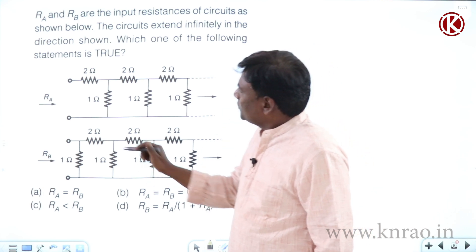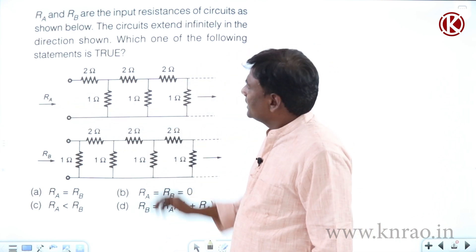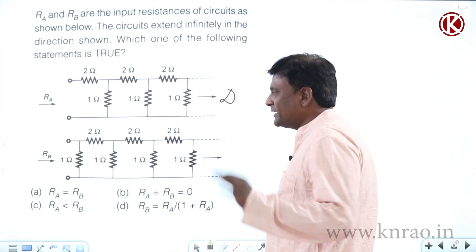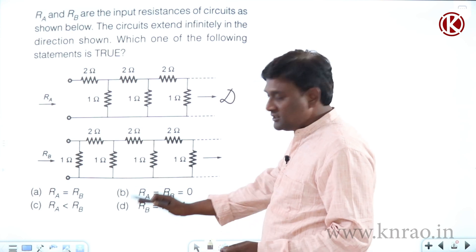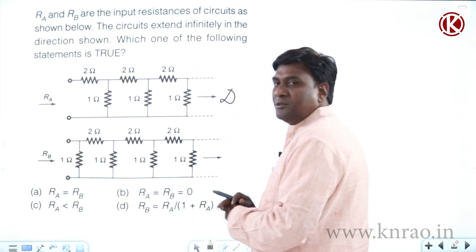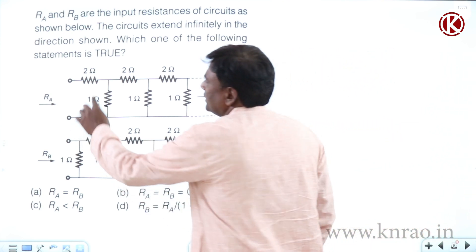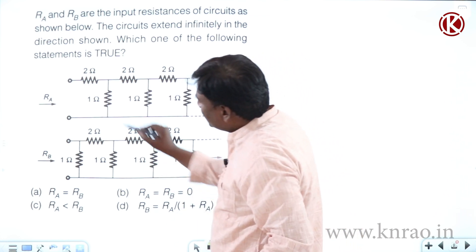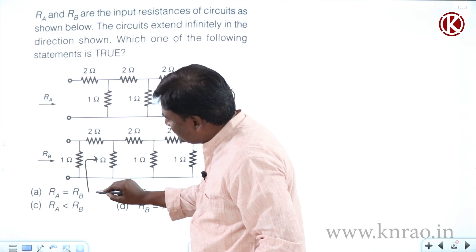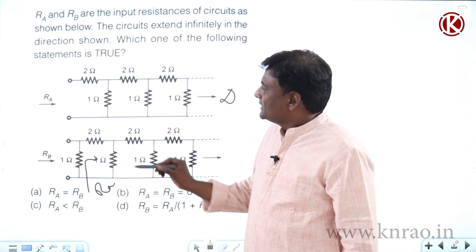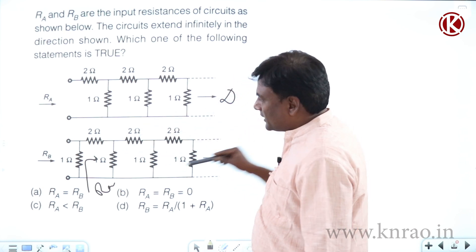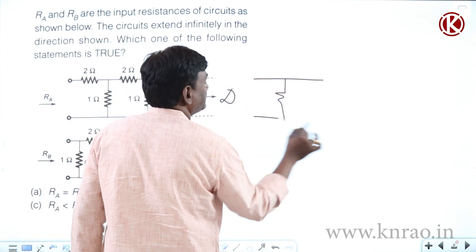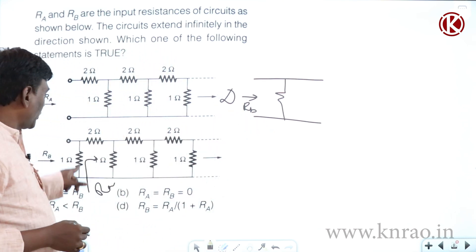Coming to the point — this particular infinite ladder is easy to solve. For the 2-1-2-1 pattern going to infinite, let's call the equivalent resistance Ra, and this other one Rb. Notice that if you have 2-1-2-1-2-1 up to infinite, and remove one section, you still have 2-1-2-1-2-1 infinite. So the resistance seen across that point is still Ra.